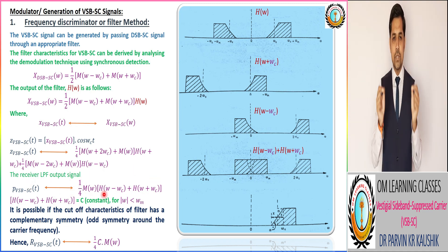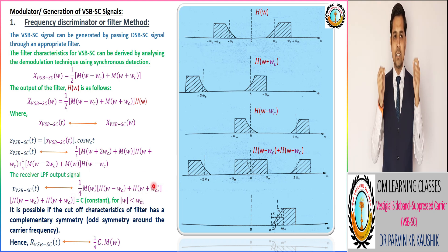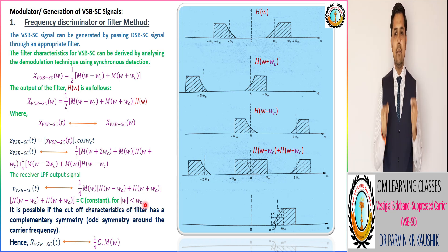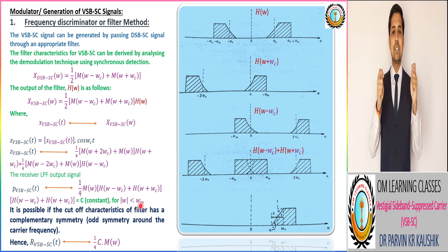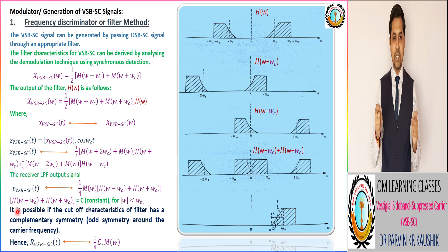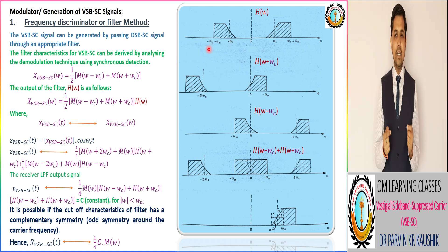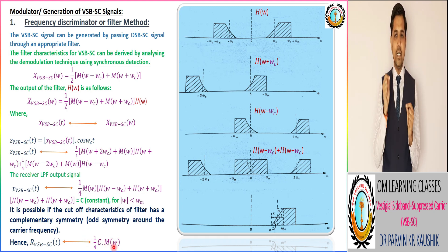Here we observe an important outcome: the term H(ω - ωc) + H(ω + ωc) should be equivalent to a constant for a duration up to the angular frequency of the modulating signal, that is up to ωm, which corresponds to the cutoff of the low-pass filter at the receiver. This is possible if the cutoff characteristics of the appropriate filter have complementary symmetry around the carrier frequency.